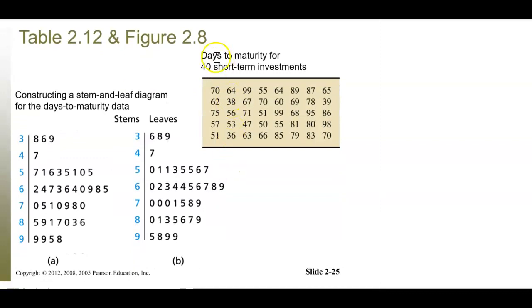Another display is a stem and leaf. For days to maturity of 40 short-term investments, the stems are the tens digits — 30s, 40s, 50s, 60s, 70s, 80s, 90s — and the leaves are the single digits. Go through the data and place each value. For example, 70 gives a leaf of 0 in the 7 stem. You should always redraw it in order — sort the leaves within each stem — so the eight, six, nine becomes six, eight, nine. Stem and leaf diagrams give a nice visualization of the distribution of your data.